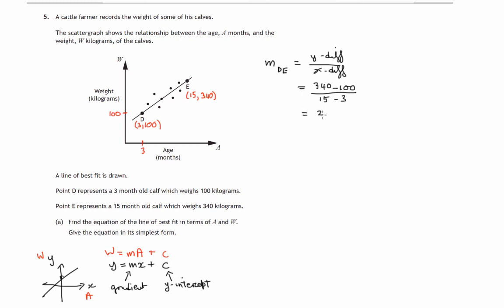So that's 240 over 12. 12 into 24 goes 2, so 20. Gradient is 20 of that line. The scales are obviously completely different in each axis. So that's the gradient, 20.